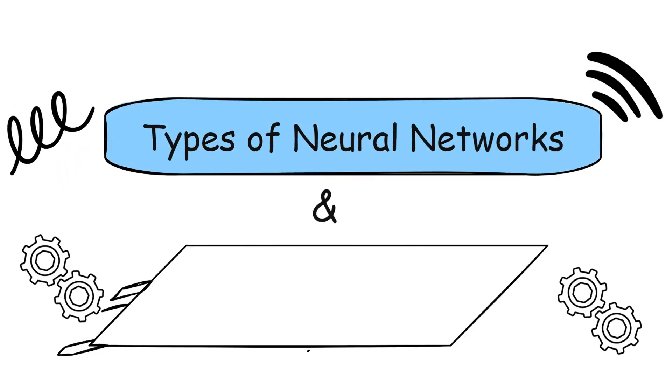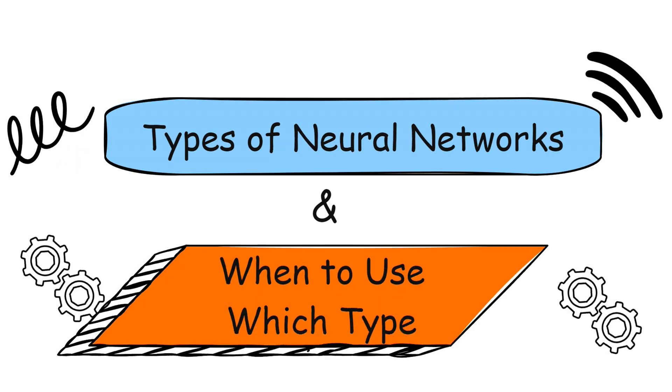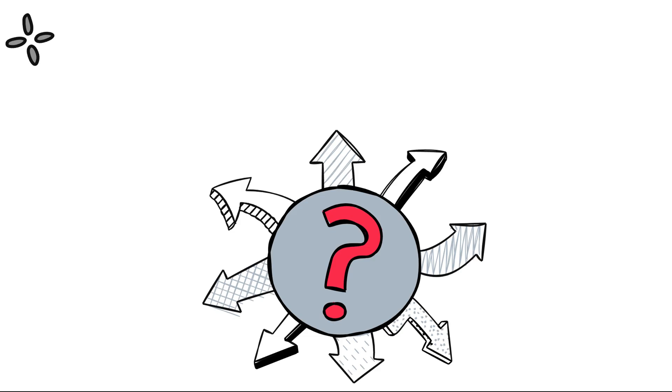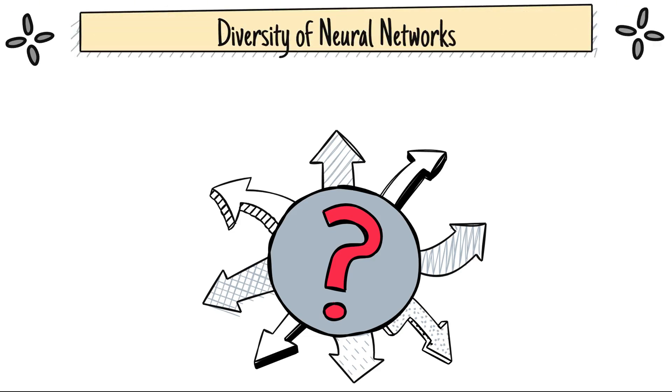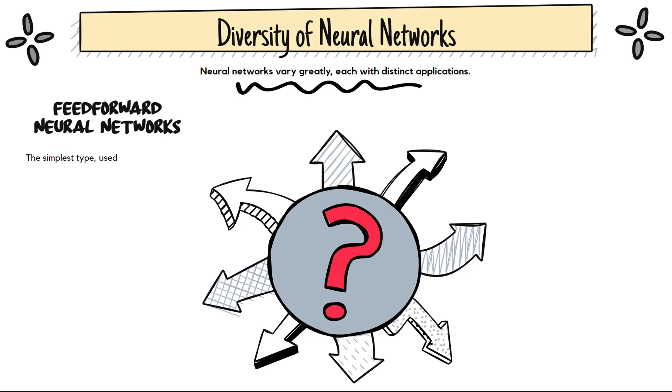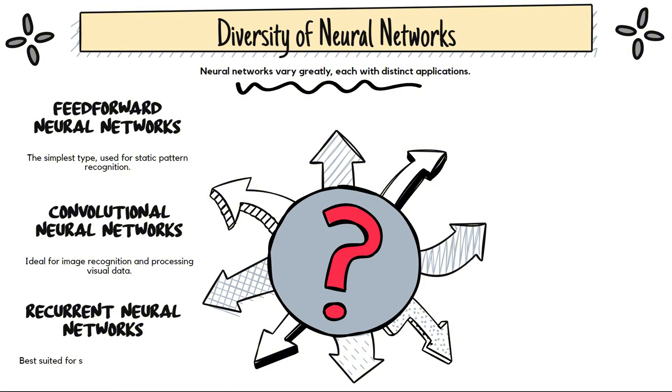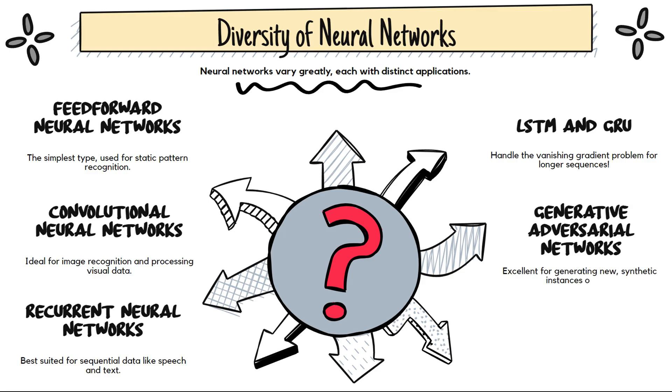Types of neural networks and when to use which type. In the rapidly evolving field of artificial intelligence, neural networks stand out as one of the most powerful tools for solving a wide range of complex problems from image and speech recognition to natural language processing and beyond. Neural networks have demonstrated remarkable capabilities. However, not all neural networks are created equal. There are various types, each suited for different tasks. Understanding these types and when to use them is crucial for any data scientist or artificial intelligence practitioner.